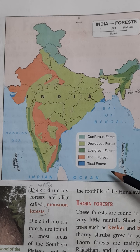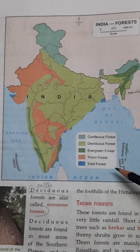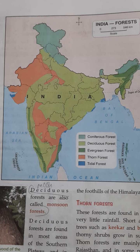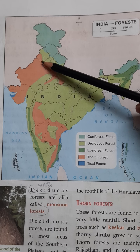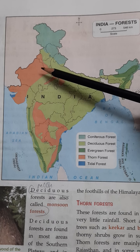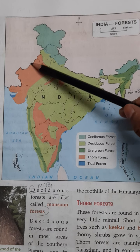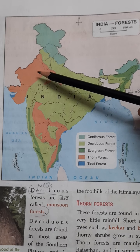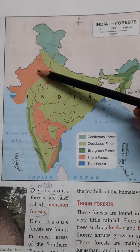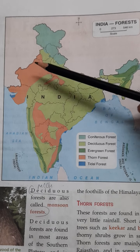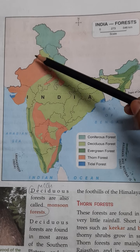Number 3 is evergreen forest, shown in dark green on the map. Trees in these forests remain green throughout the year. Examples are rosewood, ebony, and mahogany.